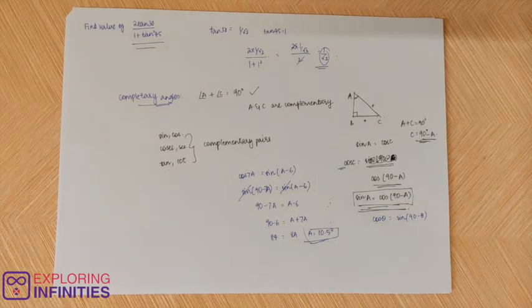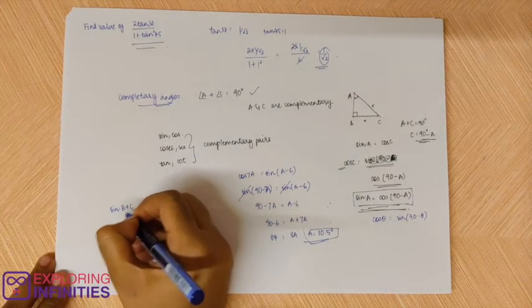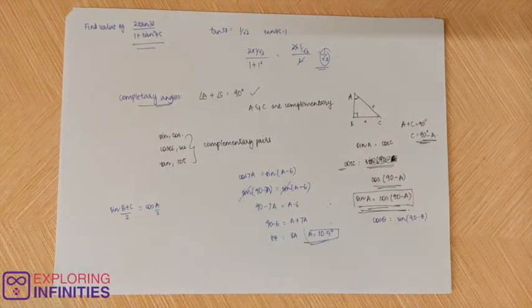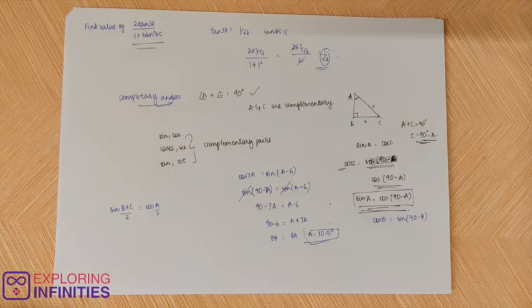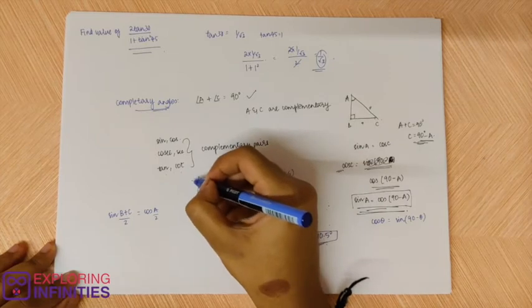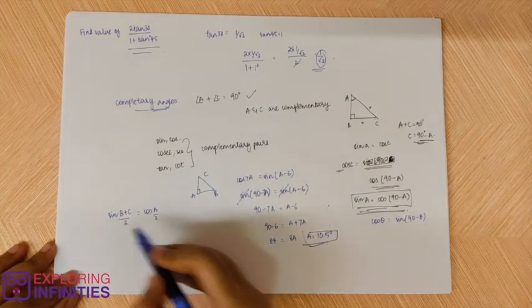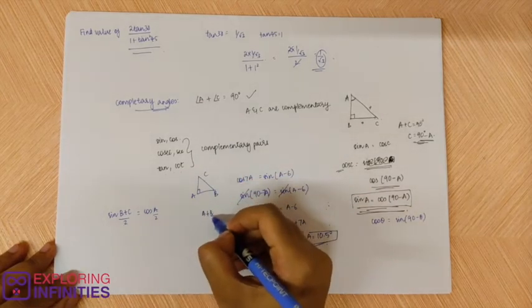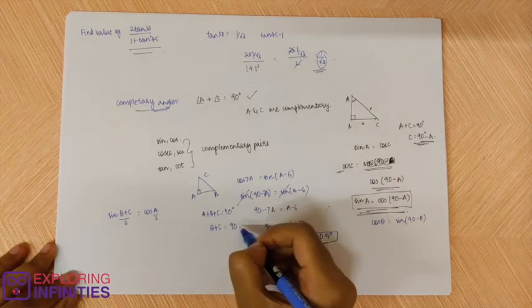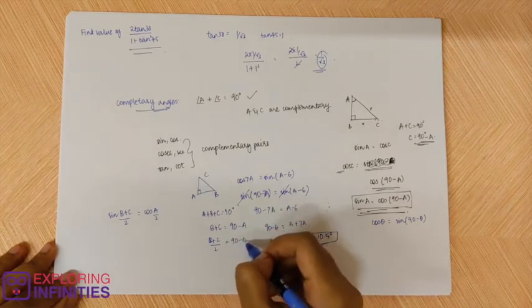Let's look at another question. Sine b plus c by 2 is equal to cos a by 2. We need to prove this. How do you prove this? Now you look at a triangle ABC. So a plus b plus c is equal to 90 degrees. So b plus c is equal to 90 minus a. So b plus c by 2 is equal to 90 minus a by 2, dividing by 2 throughout.